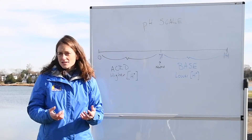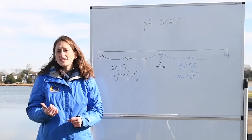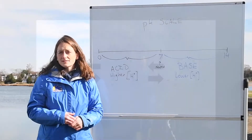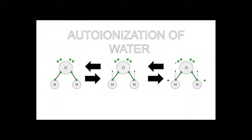To better understand this, we're going to dive into some of the acid-base properties of water. In a solution, a small percentage of water molecules spontaneously dissociate in a process known as the auto-ionization of water. The oxygen atom is greedy and it always hogs the electrons in its covalent bonds with the hydrogen atoms, pulling them away from the hydrogen atoms, giving the oxygen a partial negative charge and the two hydrogen atoms a partial positive charge.